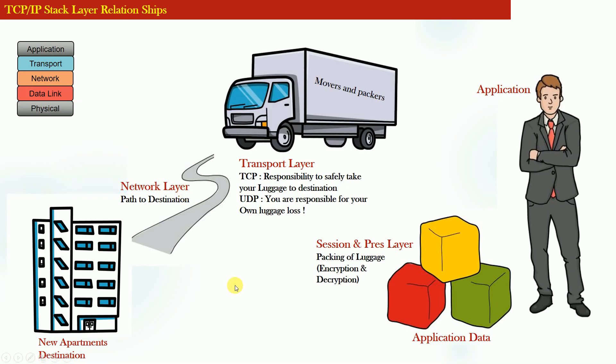Finally, the various traffic signals which the vehicle will encounter on the road can be thought of as the data link layer, because the vehicle passes through these traffic signals hop-by-hop. This is a good real-world situation where different entities and the functions performed by those entities can be mapped to different layers of the TCP/IP stack.